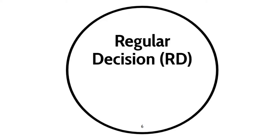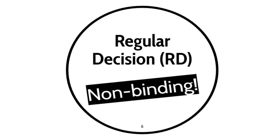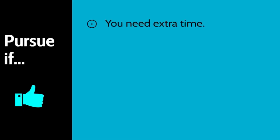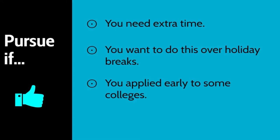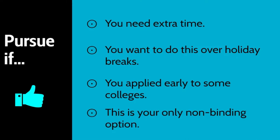Like Early Action, Regular Decision is non-binding. This is considered the normal admission process, so the deadlines are farther away. Pursue if you need extra time to make the best application possible, you want to complete some applications during your fall and winter break — which may seem like a terrible idea, but can be perfect for busy students — you applied early for some colleges on your list and now also want to apply for some later, and or this is your only non-binding option for a certain college because not all colleges have an early action process.